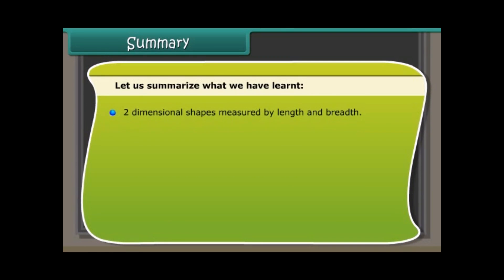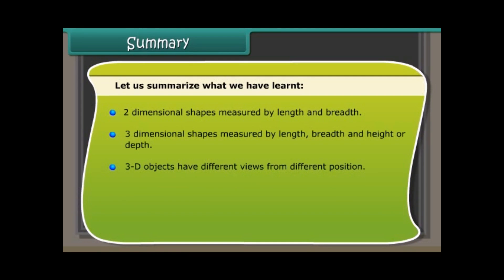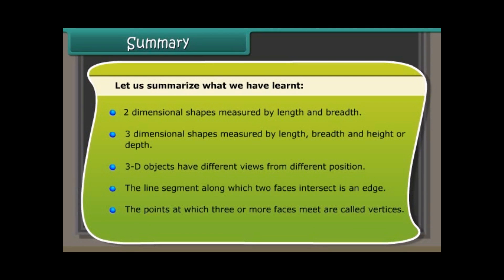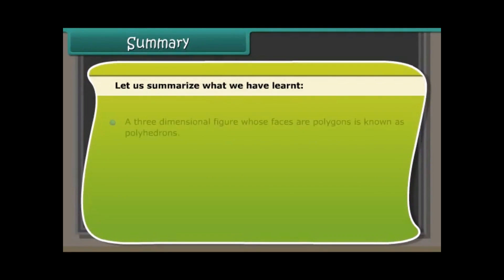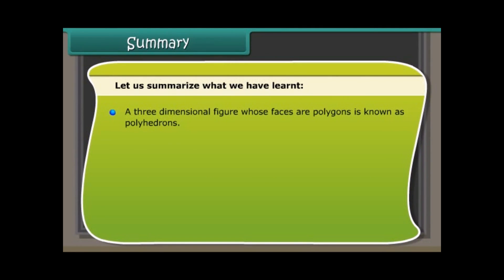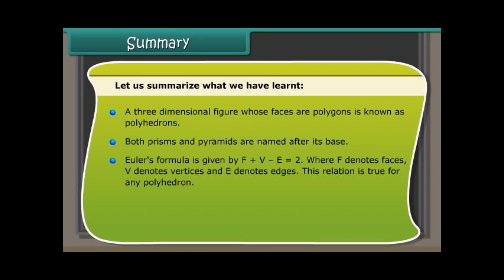Summary: Two-dimensional shapes are measured by length and breadth. Three-dimensional shapes are measured by length, breadth, and height or depth. 3D objects have different views from different positions. The line segment along which two faces intersect is an edge, and the points at which three or more faces meet are called vertices. A three-dimensional figure whose faces are polygons is known as a polyhedron. Both prisms and pyramids are named after their bases. Euler's formula is given by F + V − E = 2, where F denotes faces, V denotes vertices, and E denotes edges. This relation is true for any polyhedron.